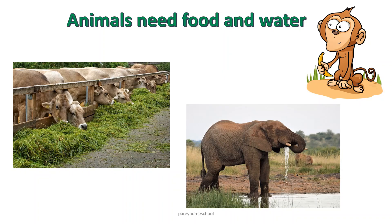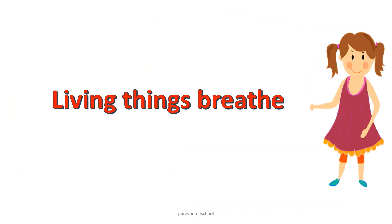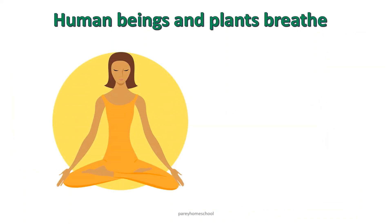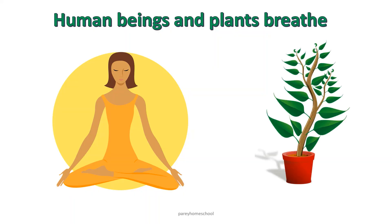Animals also need food and water. A few animals eat grass or plants, whereas a few animals eat other animals for their survival. Living things breathe. Human beings breathe using their lungs. Plants also breathe — for that, they need fresh air.